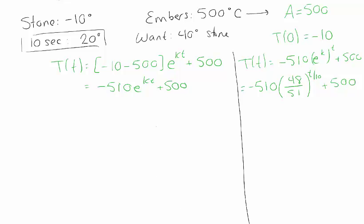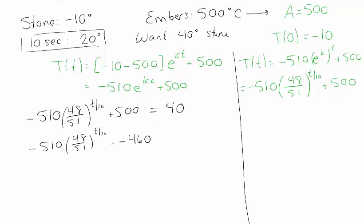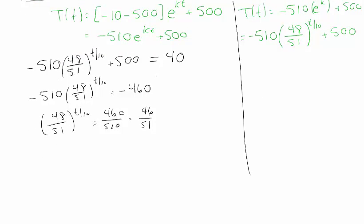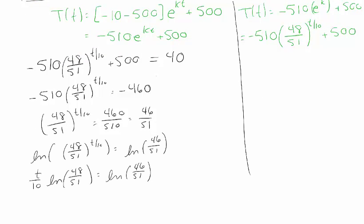Now this is what I'm going to set equal to 40. So the first thing I do is subtract 500 from both sides. The next thing I do is divide both sides by negative 510. And now I really do want to solve for t. But the problem is it's in an exponent. So the thing I have to do is take a logarithm and that will bring it down. Remember my logarithm rules say that when I have the log of something to a power, I can bring that power down as a coefficient. That's why we take the logarithm of both sides. And now this is just t divided by 10 multiplied by some number. So I can just solve for t by dividing by log of 48 over 51 and multiplying by 10.